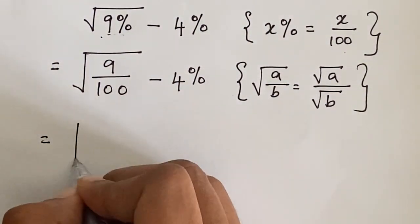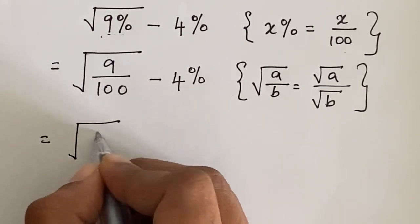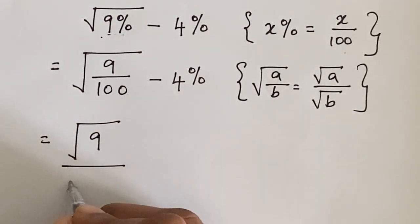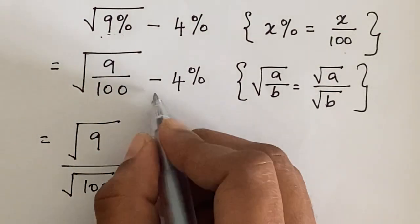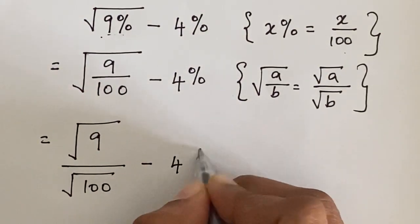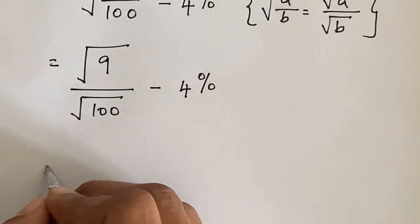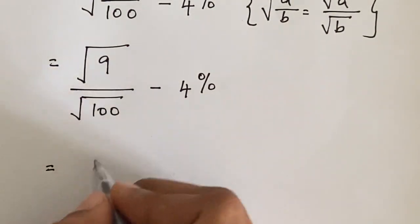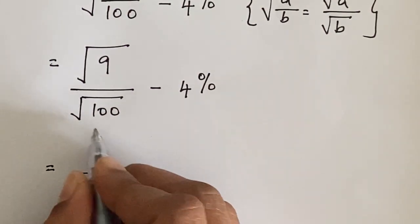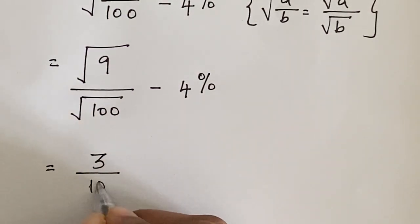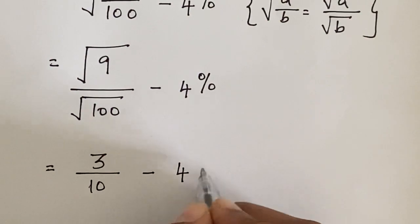So we get square root of 9 divided by square root of 100 minus, let's write the 4 percentage as it is, which is equal to, square root of 9 is 3 divided by square root of 100 is 10 minus 4 percentage.